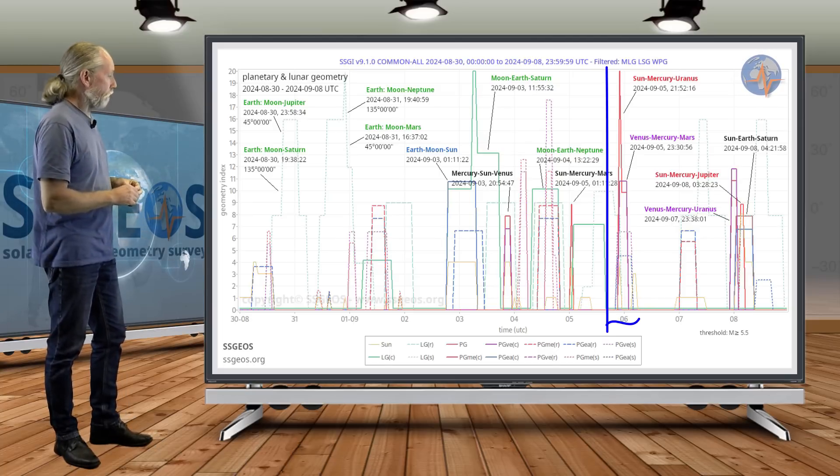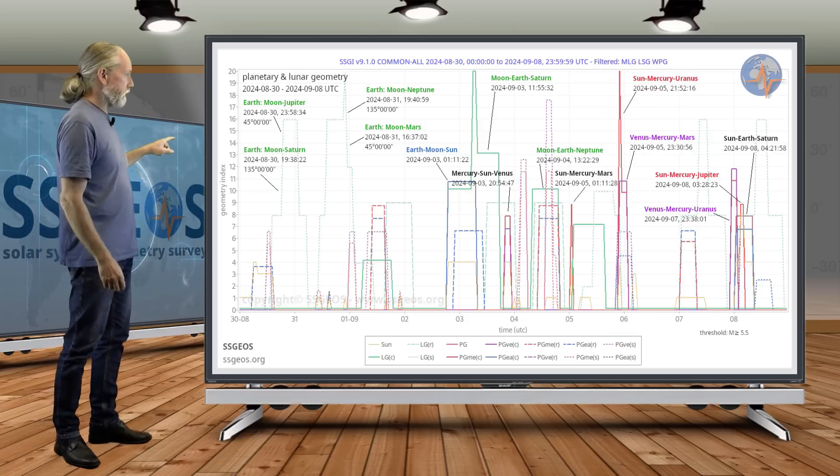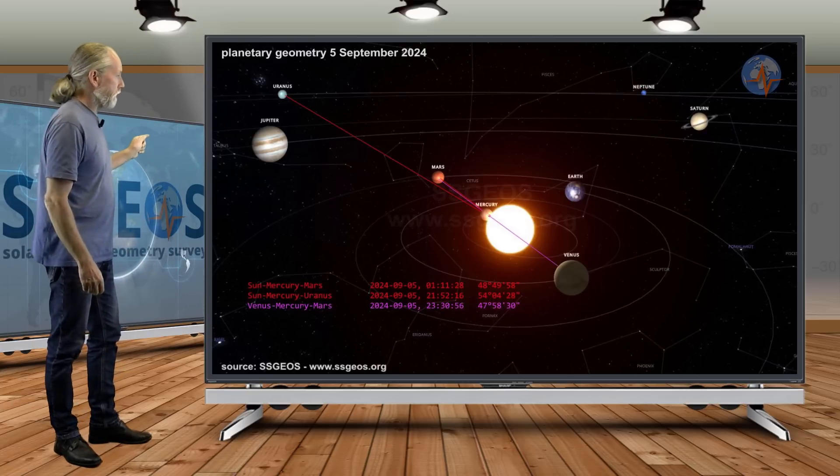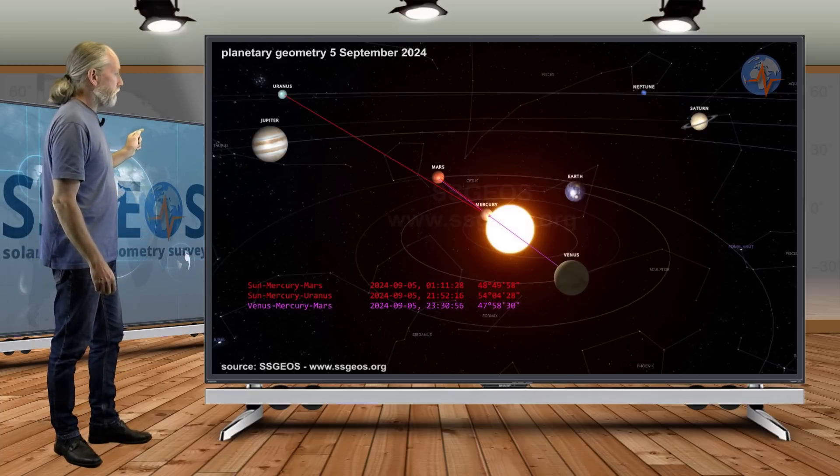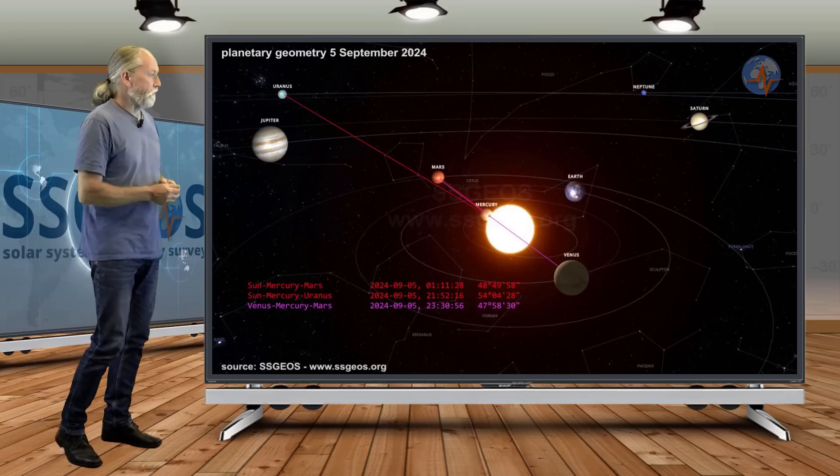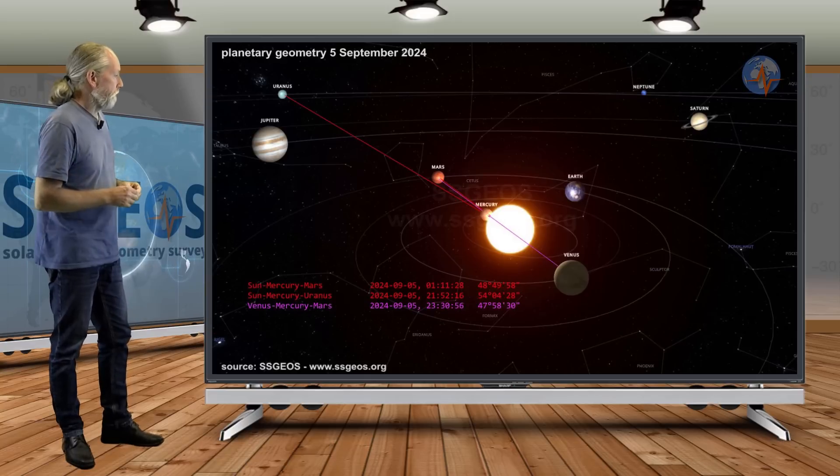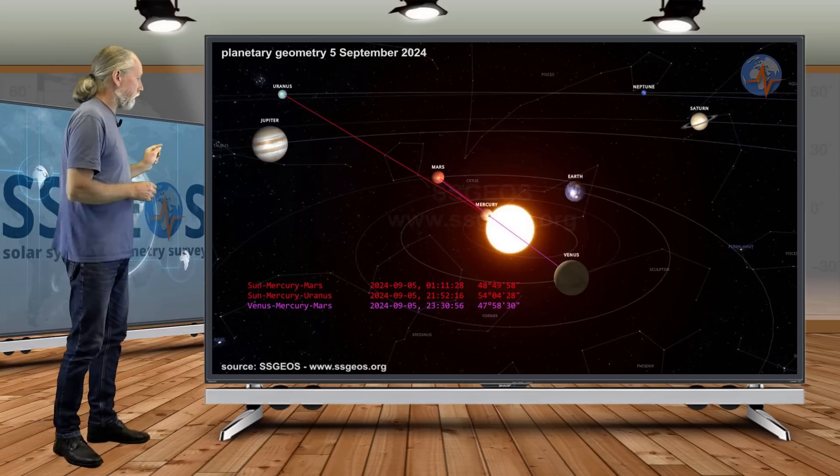We have a convergence of planetary conjunctions, three actually on the 5th. If we look at the solar system, we see these planetary conjunctions: Sun-Mercury-Mars, Sun-Mercury-Uranus, and Venus-Mercury-Mars. That will happen on the 5th, early on the 5th and later on the 5th. And if we look back at the SSGI graph,